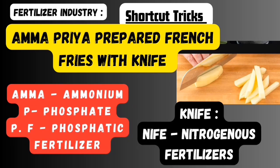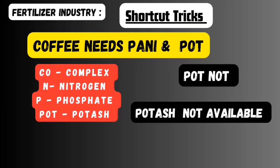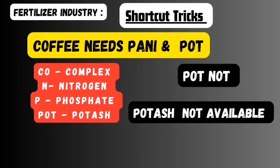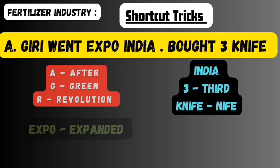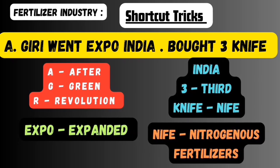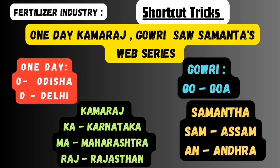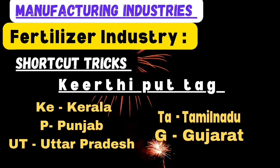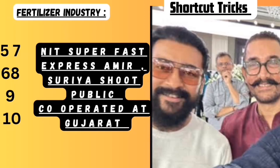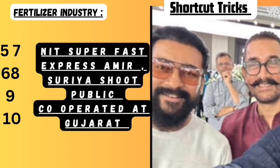Recap of all shortcuts: Amma Priya prepared french fries with knife. Coffee needs paani and pot, but pot is not available. A Giri went to Expo India and bought three knife. One day Kamaraj and Gauri saw Samantha's web series. Kirti put tag — these are the areas that contribute half of fertilizer production. Night super fast express, Amir and Surya shoot goes on, public gave cooperation at Gujarat. That's all.